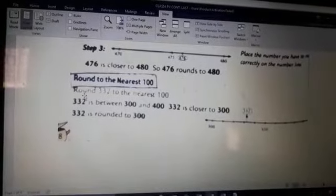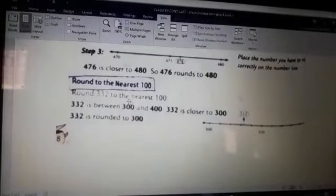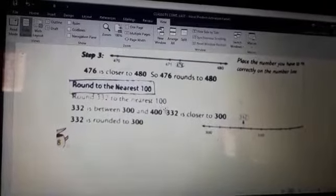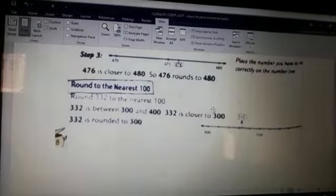One example, 332 is given. It will be rounded to 300 or 400. As it is before 350, it will be rounded to 300.